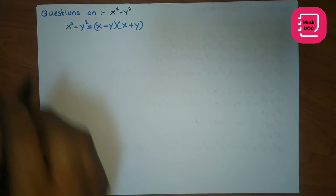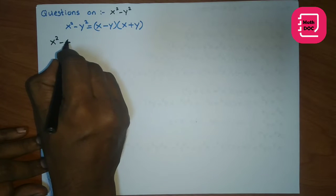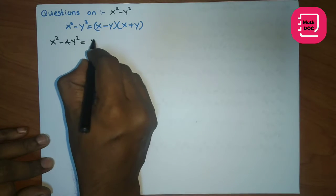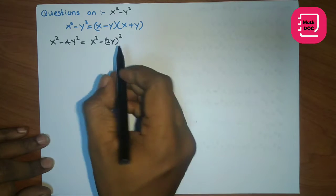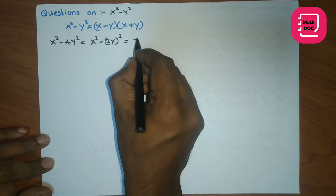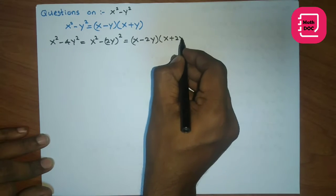Then let's factorize x-squared minus 4y-squared. Here you can write as x-squared minus 2y-squared. Then again we can see here the difference of two squares. Then the factors will be x minus 2y times x plus 2y.